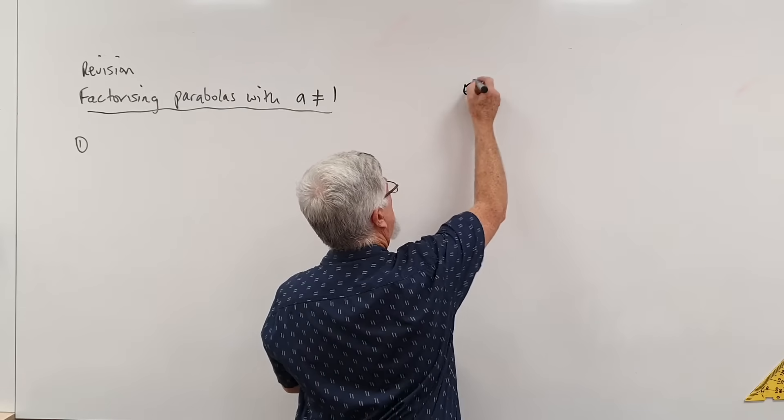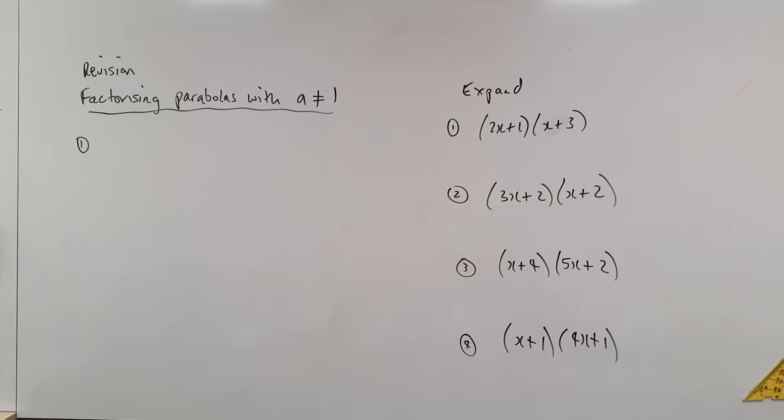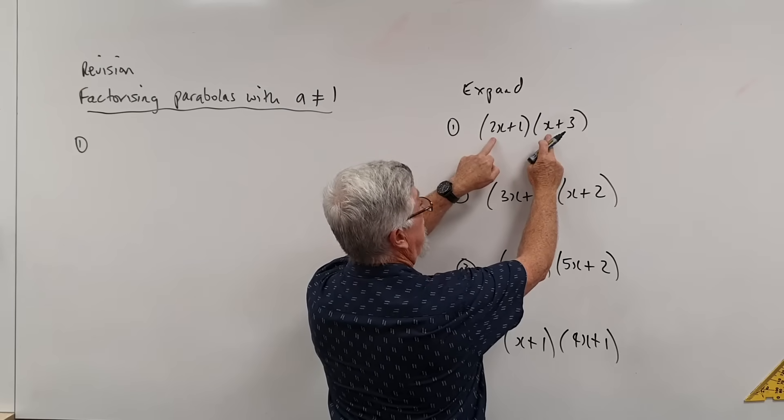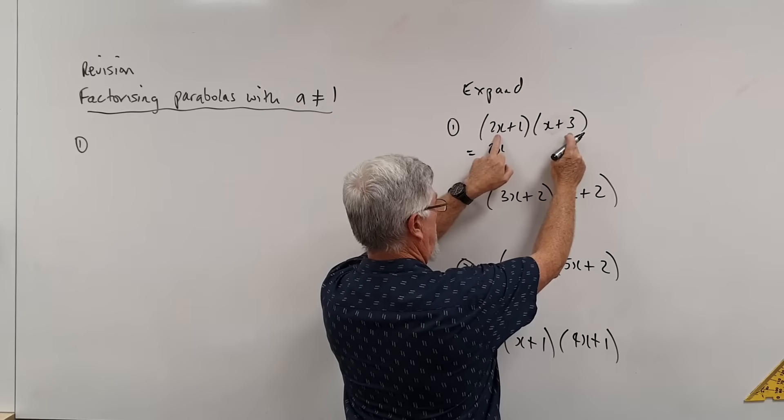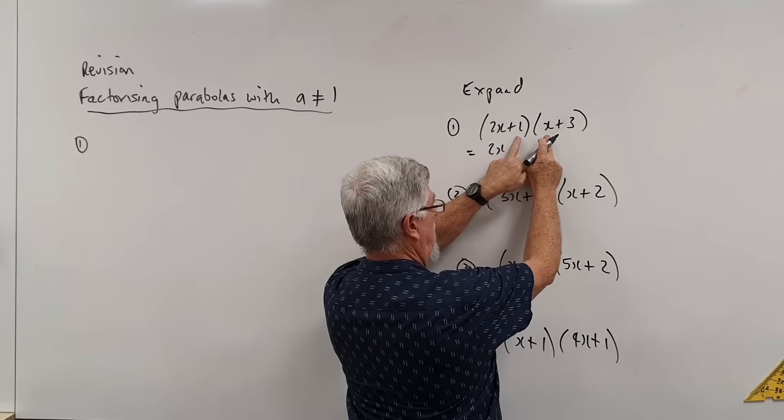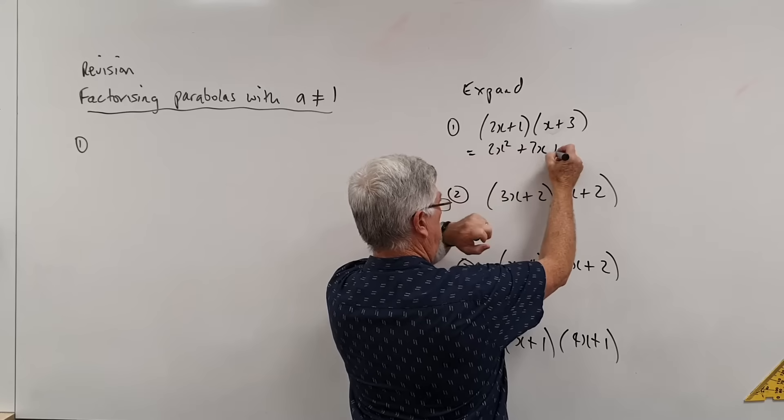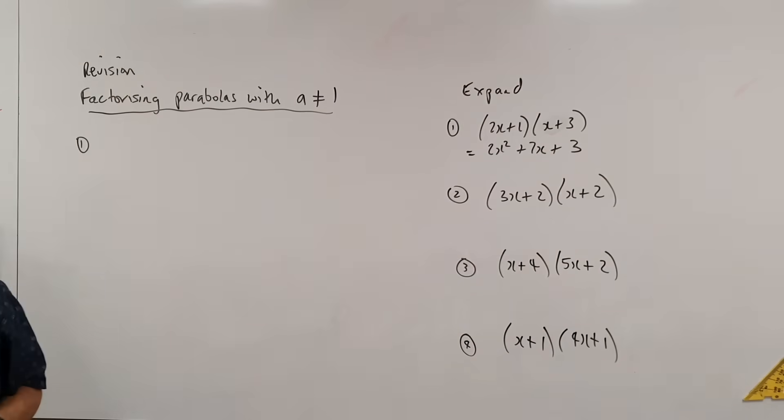So here if I said expand, maybe you should all do it. Do you understand if I just point to them what I mean? 2x squared, 6x and x, so it's 7x, and then 3. I presume a lot of people know how to do that. And there was 9 negatives, I didn't go stupid, I was just going on these.